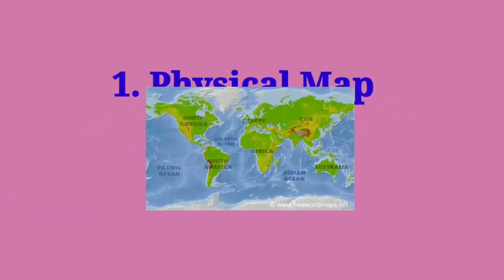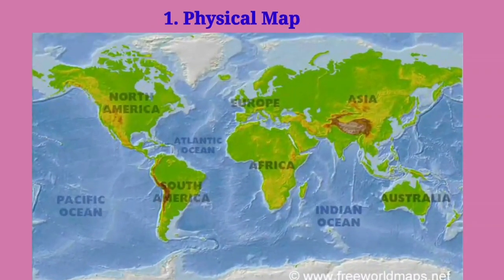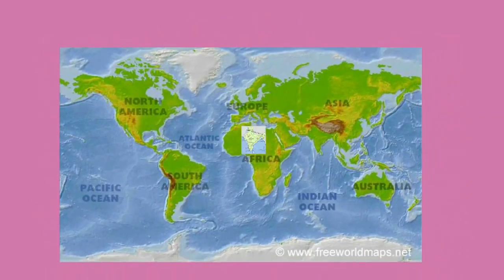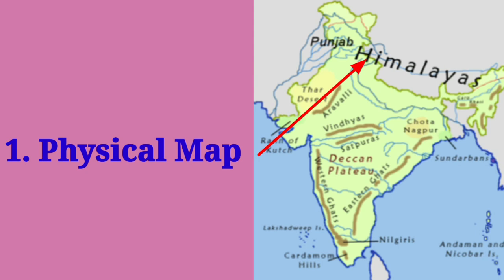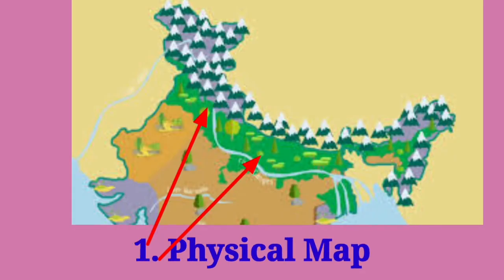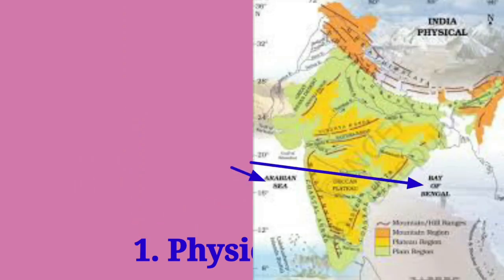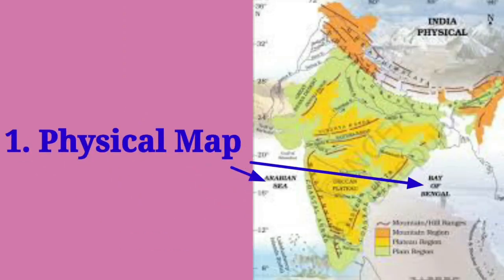Physical maps show the natural forms of the earth, such as mountains, plateaus, plains, rivers, oceans, etc.